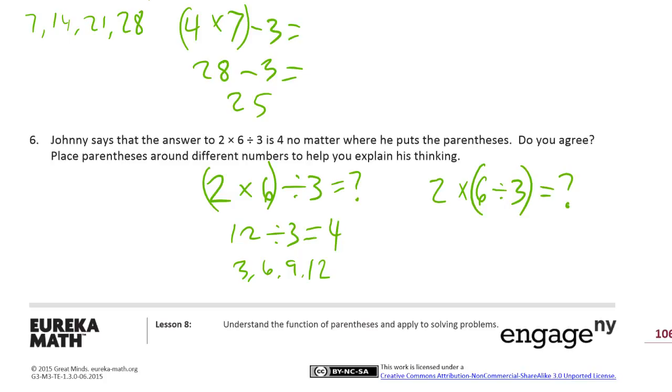6 divided by 3 is 2, and then 2 times 2 equals 4, it's the same, so I agree. If you want to be extra fancy about it, you can write the two expressions being equal to each other, and that they both equal 4.